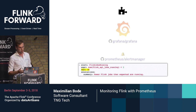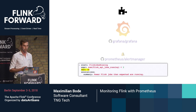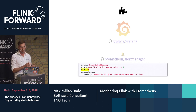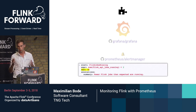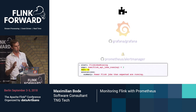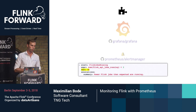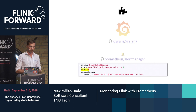The Alert Manager can also do a lot of other things. It can aggregate several alerts into one notification, throttle your notifications, route different alerts to different teams, and silence alerts if you know there will be an expected downtime.